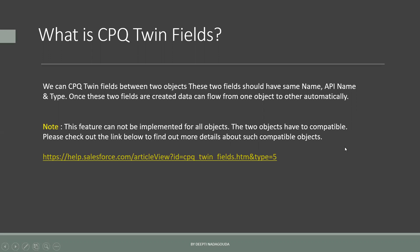So what is CPQ twin fields? Twin fields are nothing but the fields that are added on two objects with the same name, same API name, and the same type and same values. Once these two fields are added on two different objects, the data flows between these two objects and within these two fields automatically.